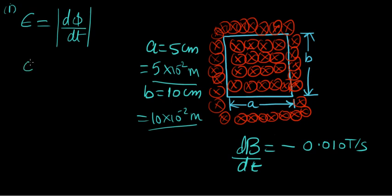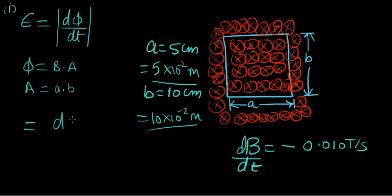We know that Φ is given by B times A, where B is the magnetic field strength and A is the area of the conductor. And we know that A is the product of the two side lengths, so substituting: EMF = d(B·A·B)/dt. Since A and B (the dimensions) are constants they come out, but B (the field) is decreasing so it stays inside the derivative, giving us A·B · dB/dt.